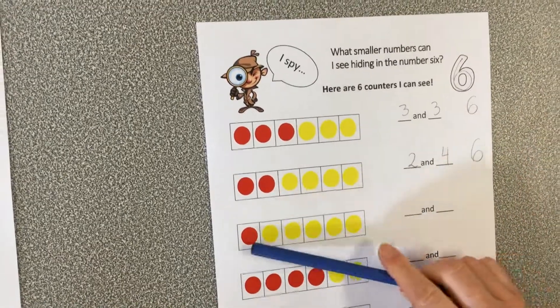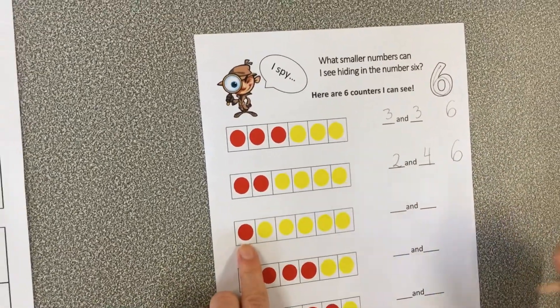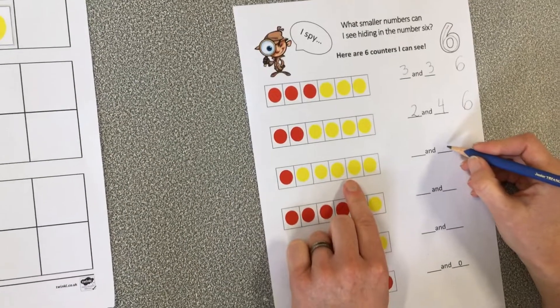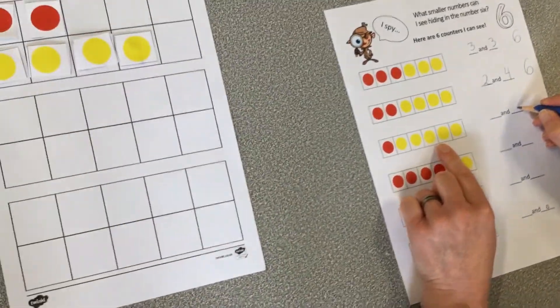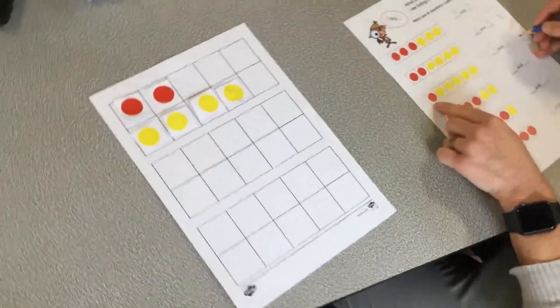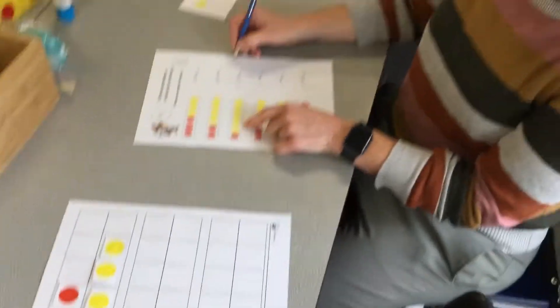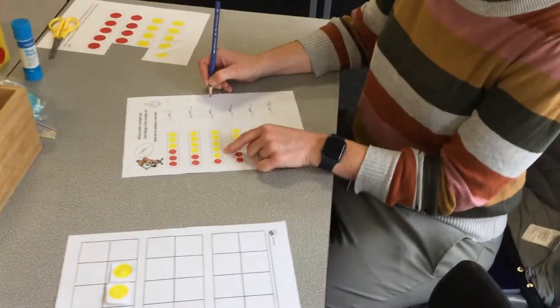Your job, preps, is to go through and work out how many reds on this side, how many yellows, and write your answer here. And if they add up to six, if they make six altogether, you can write your six over on this side.